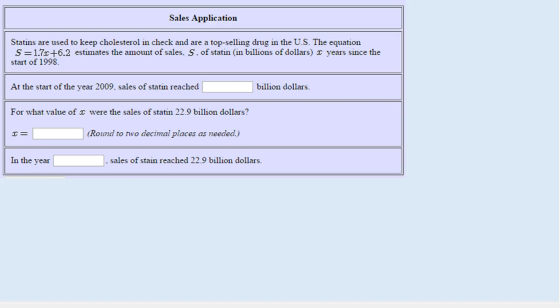Let's begin by reading the question and highlighting important information. Statins are used to keep cholesterol in check and are a top-selling drug in the U.S. The equation S equals 1.7X plus 6.2 estimates the amount of sales S of statin in billions of dollars X years since the start of 1998.